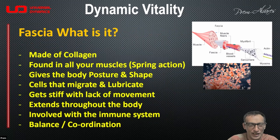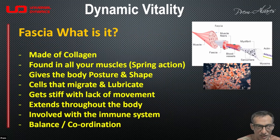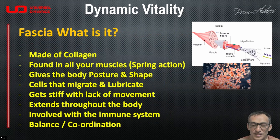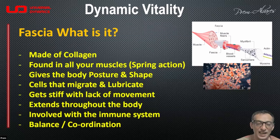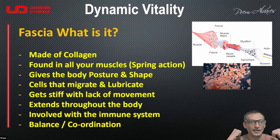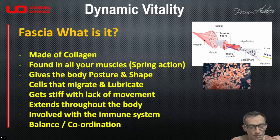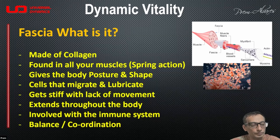What really is it? It is generally made up of collagen, and quite a lot of it is found in your muscles. As you can see in this diagram, so many parts of your muscle actually contain this fascia. It gives you the spring action — when you move your hand and bring it back, you've got that little spring action. It's extremely flexible, takes a form, and gives you a little more strength to pull your muscle back and forth. It also helps give the body posture and shape.